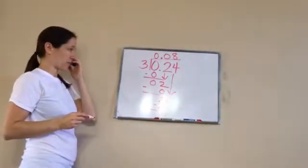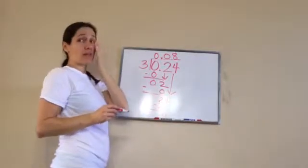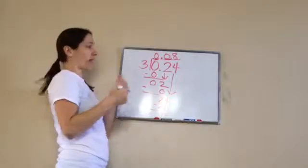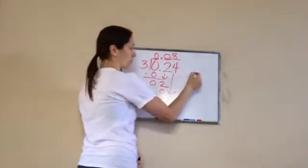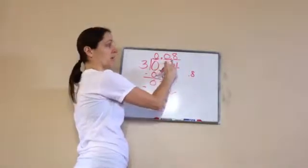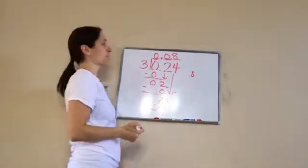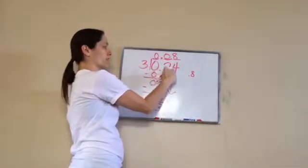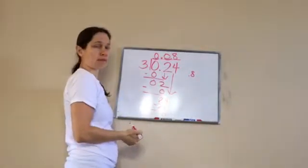Three goes into 24 eight times. Eight times three is 24 and we get an even answer. Now it's very important that you have these zeros in here - they're called placeholders. If nothing was filling those in then it would just be 0.8, and that's not the right answer. It's not eight tenths, it's eight hundredths.